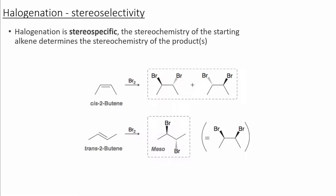If we start with cis-butene, we'll obtain these two products. If we start with trans-butene, we'll obtain the meso product. The stereochemistry of the starting material determines the stereochemistry of the products.